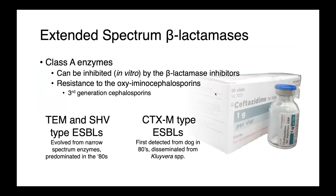Our extended-spectrum beta-lactamases are class A enzymes. In vitro, we can inhibit them with beta-lactamase inhibitors, although penicillin-beta-lactamase inhibitor combinations are not used for treating infections in these patients. The key phenotype associated with ESBLs is resistance to the oxyimino-cephalosporins — our third-generation cephalosporins. There are two main ESBL groups: TEM and SHV types, which evolved from narrow-spectrum TEM and SHV and predominated in the 1980s, and more recently the CTXM-type ESBLs. Interestingly, the first CTXM was detected from a dog in Japan in the 1980s, an experimental animal used in pharmacokinetic studies.